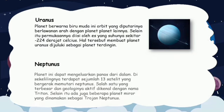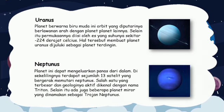8. Neptunus. Planet ini dapat mengeluarkan panas dari dalam. Di sekelilingnya terdapat sejumlah 13 satelit yang bergerak memutari Neptunus. Salah satu yang terbesar dan geologinya aktif dikenal dengan nama Triton. Selain itu, ada juga beberapa planet minor yang dinamakan sebagai Trojan Neptunus.